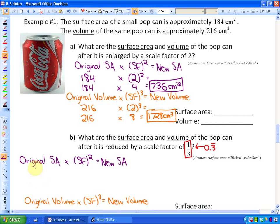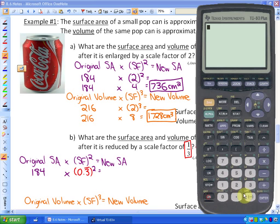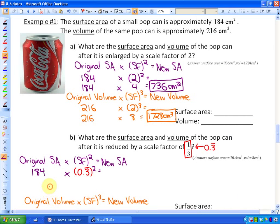So what it would be is the original surface area, which once again is 184 times the scale factor, which I'm going to represent as 0.3 continued squared. So if I do 0.333333333333333 squared, and multiply it by 184, I would get the new surface area, which is roughly 20.4. So this is roughly 20.4 cm squared, because it's 184 times 0.1.